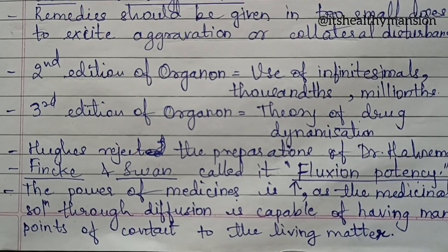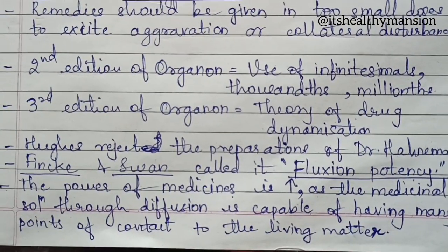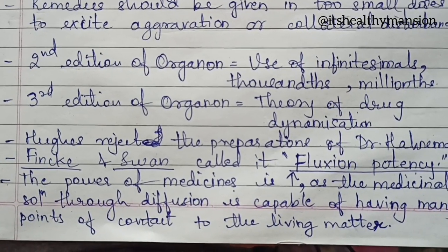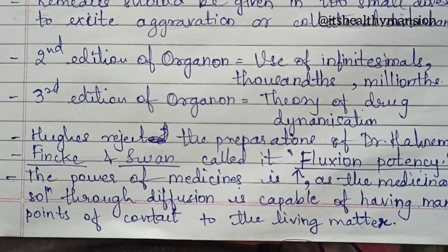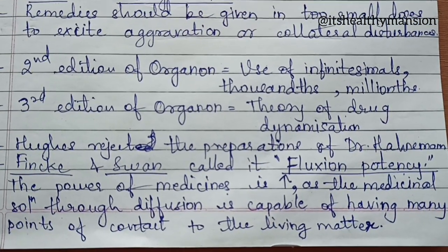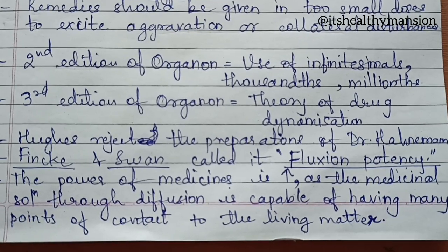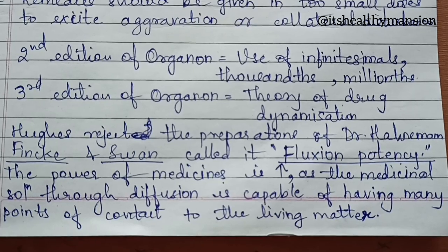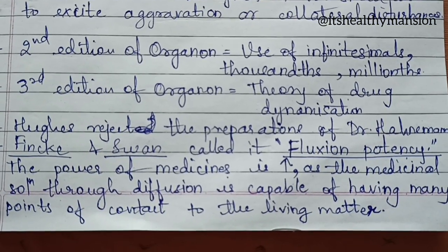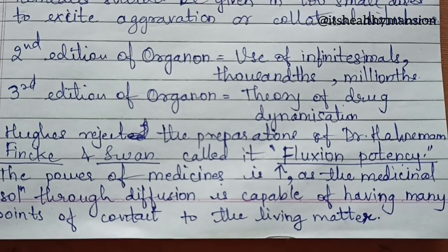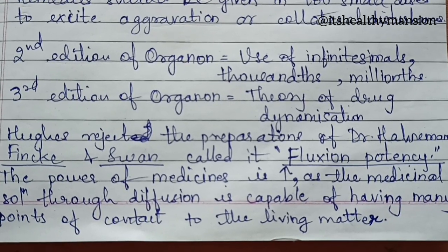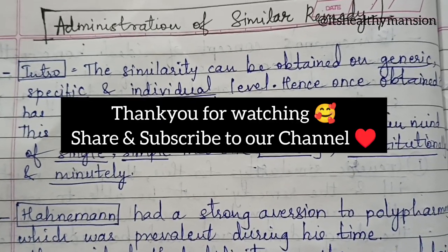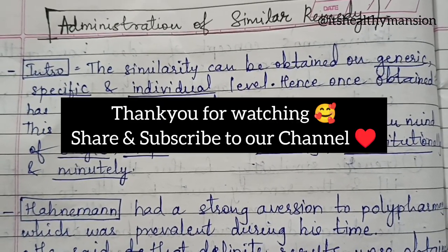In the organon second edition, there is the use of infinitesimal doses in the thousands and millions. In the third edition of the organon, there is the theory of drug dynamization. Uges rejected the preparations of Dr. Hahnemann. Fink and Swann called it Fluxion Potentization. The power of medicines is great, as the medicinal solution through diffusion is capable of having many points of contact with living matter. So you understand the Uges' mind behind the administration of similar remedy.